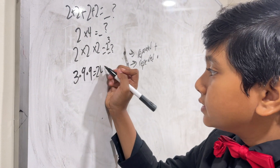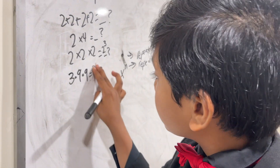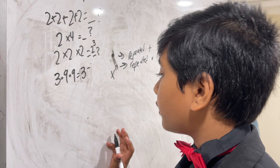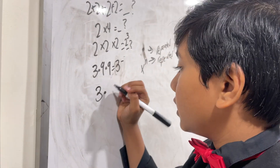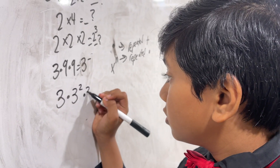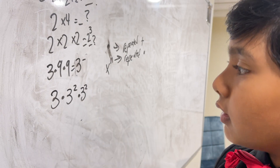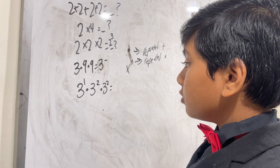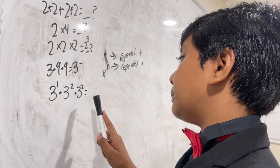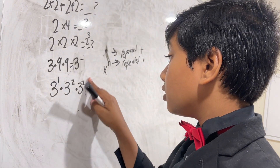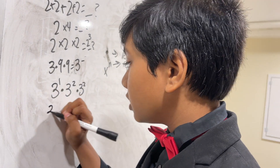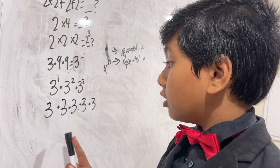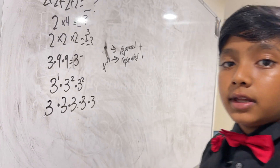What if we have different numbers, like three times nine times nine? Obviously that's 243, but how do we convert this into an exponent with base three? Well, nine is simply three times three, or three squared. So we have three to the first power times three to the second power times three to the second power. If we expand it, that's three times three times three times three times three.